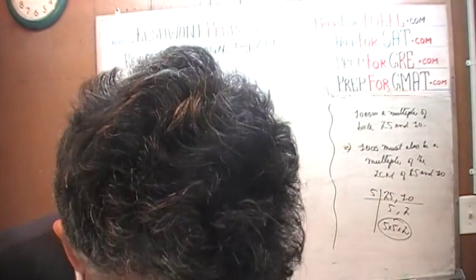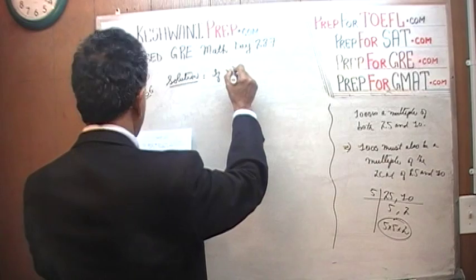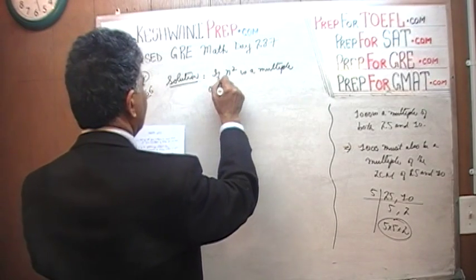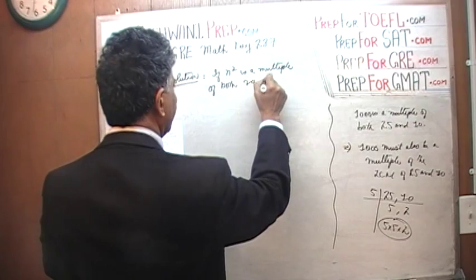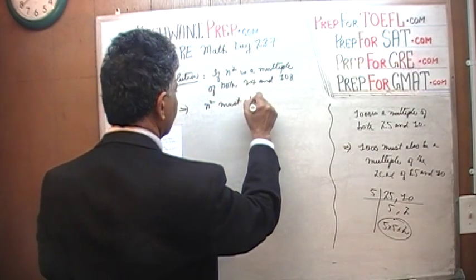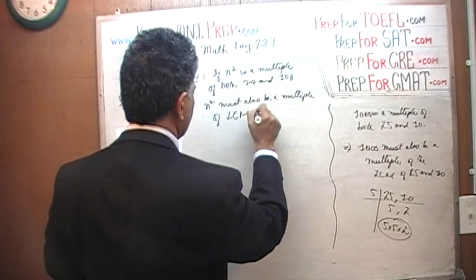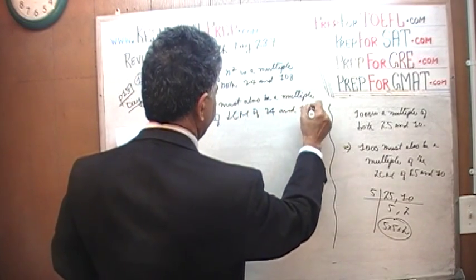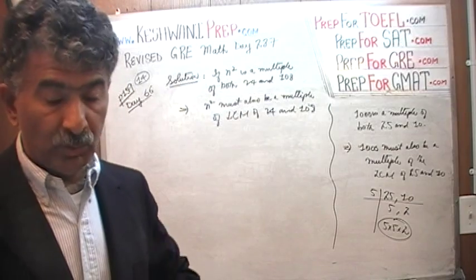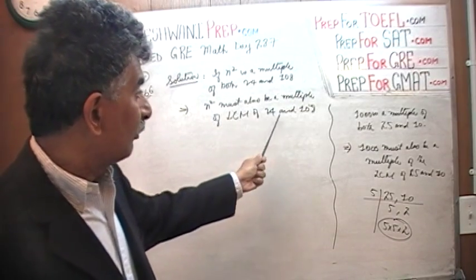The solution is as follows. We are told that n² is a multiple of both 24 and 108. If that's true, then n² must also be a multiple of the least common multiple of 24 and 108.